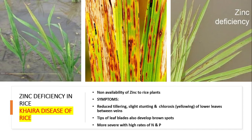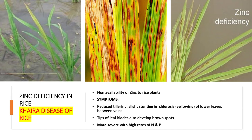Symptoms include reduced tillering, slight stunting, and chlorosis of the lower leaves between the veins. Tips of the leaves and leaf blades also develop brown spots. In more severe cases, high rates of nitrogen and phosphorus can also lead to deficiency of zinc and these symptoms.